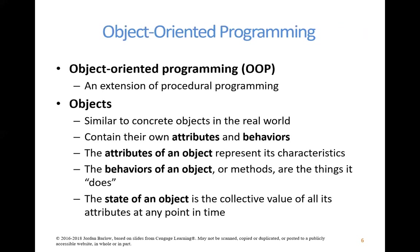Object-oriented programming is a specific type of programming — an extension of procedural programming that uses the grouping and language of the programming code to represent something in the real world. C-Sharp is an example of an object-oriented programming language. In an object-oriented language, you group together your statements and methods in order to represent something in the real world.